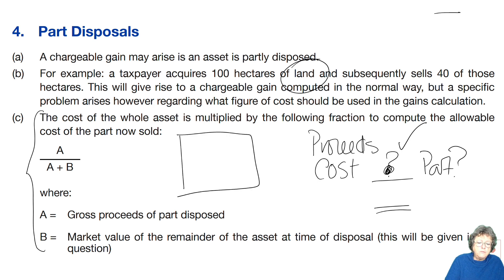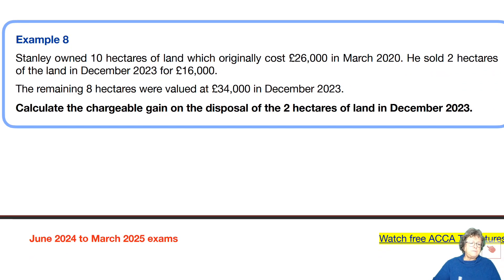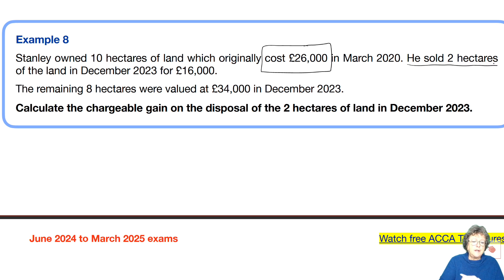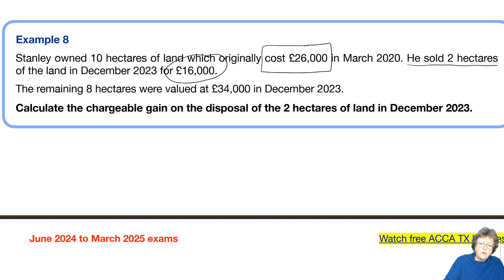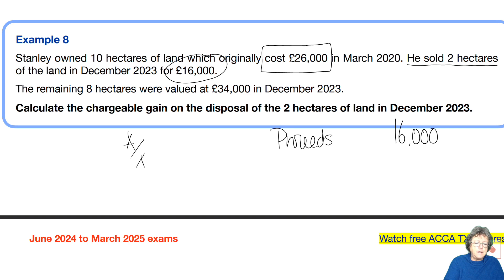The market value of what remains will be given to you in the question. For example: Stanley owned 10 acres of land with an original cost, and he sold 2 hectares for 16,000. We're also told the market value of the remaining land. So the proceeds were 16,000. As I've said many times — and I will remind you again — every time you do a working, please show everything. It's not about the answer; it's about the process. We're looking at A over A plus B times cost. A is 16 over 16 plus 34.